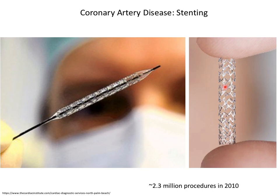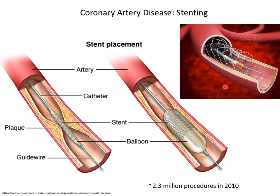A couple million stents are done a year, and it's transformed what happens when you go to the ER with chest pain — if they find a significant coronary stenosis they can just open it up right away. Here's how it works: there's a significant stenosis in the vessel, maybe down to 10% of the area, you get across that stenosis with your guide wire and line up the device with respect to the stenosis using markers.